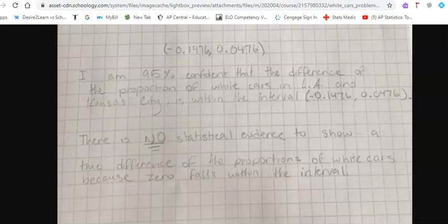Getting a result like this is not very satisfying. Statisticians love getting intervals that don't have zero, because if we have an interval that doesn't have zero in it, that would be evidence that shows that our inference that the two proportions are indeed different.